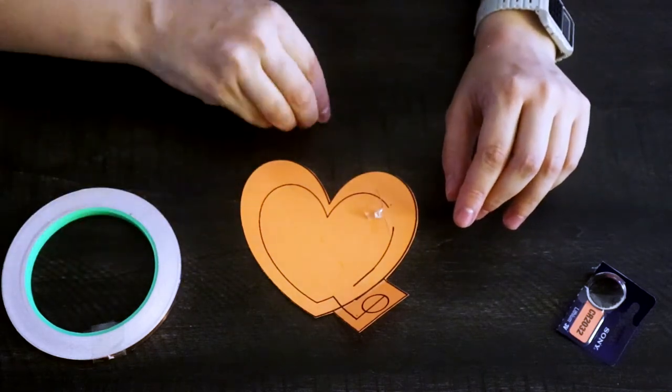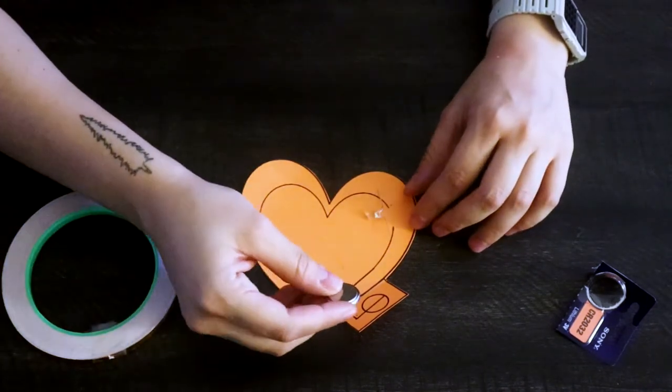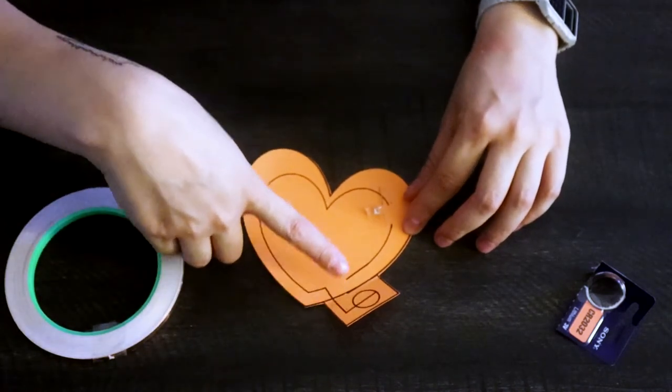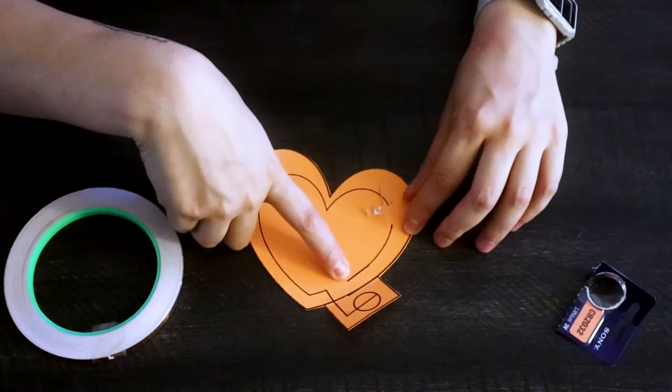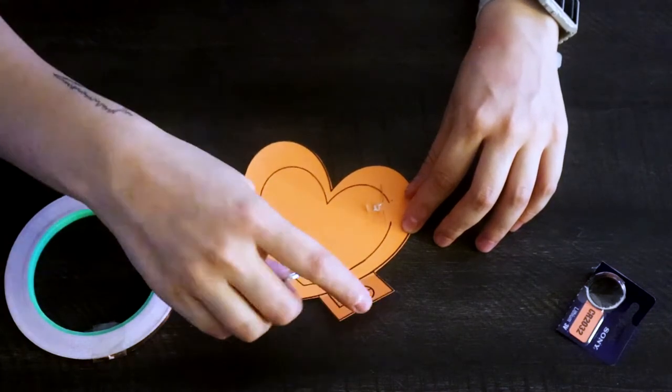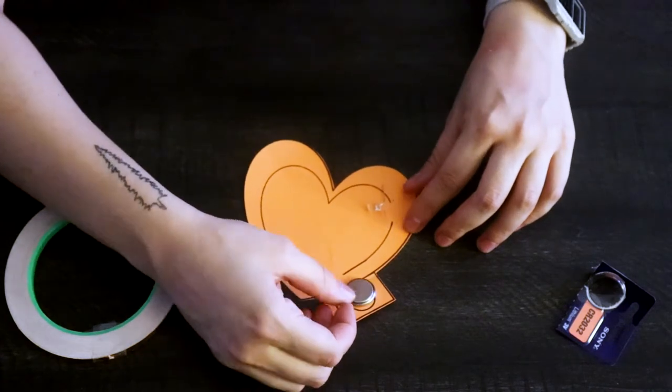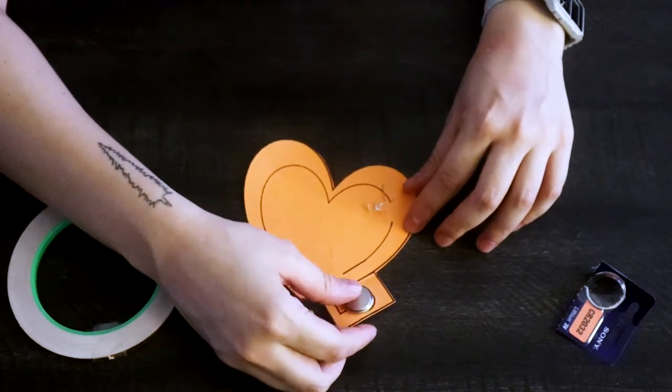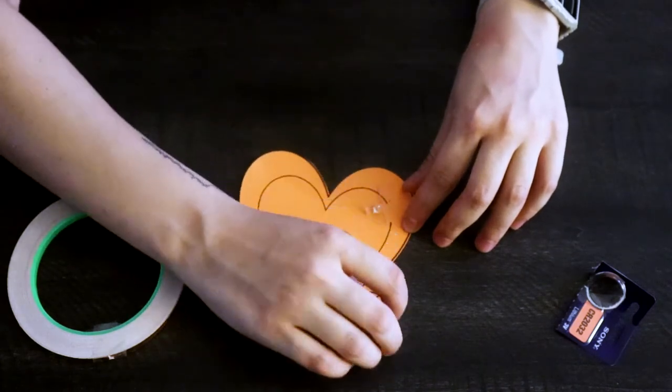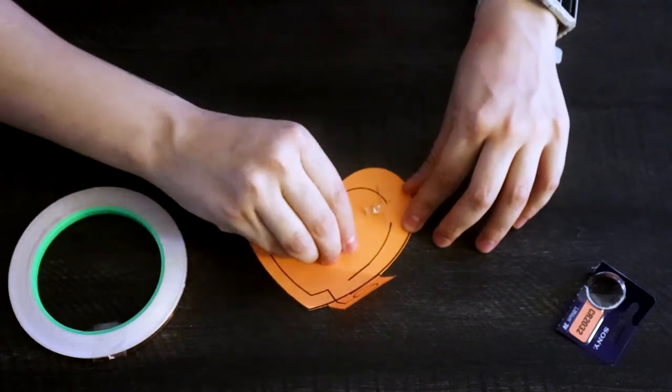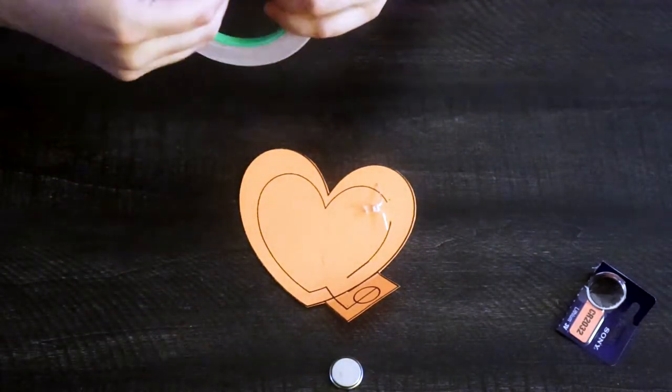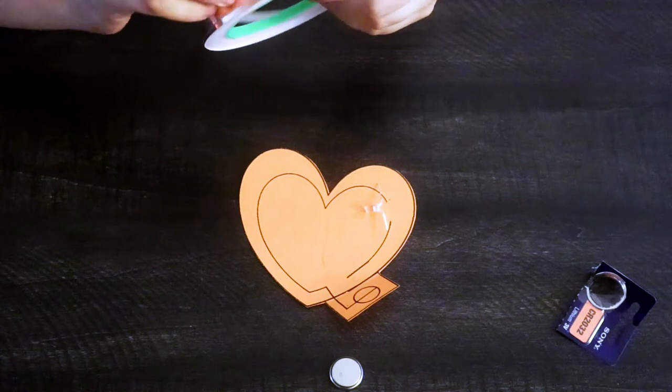And then we want to take this battery and we want to make sure the positive side is down because our plus sign is right here and our negative sign is right here. So that means we want the positive side down, so that when we flip the switch, the negative side touches where the negative side is. So I'm going to put this here. We actually need to tape it down so it'll stay. So I'm going to do that with my copper tape.